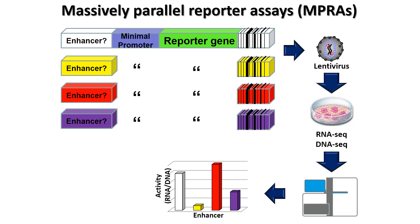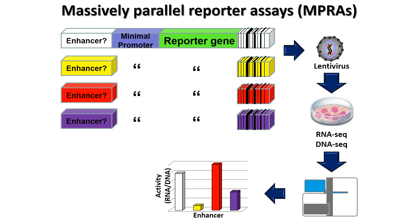In summary, I've shown you massively parallel reporter assays that allow us to test thousands of sequences and mutations for enhancer or promoter activity. We've also developed this about four years ago to work with lentivirus. The advantage of lentivirus is that it integrates into the genome, providing a readout within the genome versus an episomal readout, and it can infect hard-to-transfect cells like neurons, providing a wider range of cell types where we can apply this technology.